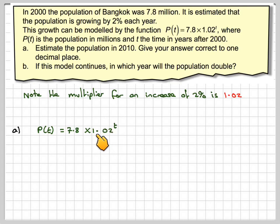So what happens is if it increases by one year, you just multiply by 1.02. If it's two years, it's 1.02 squared. That's the initial population.